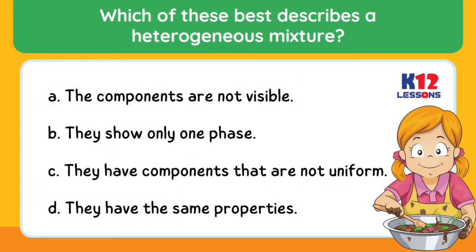Which of these best describes a heterogeneous mixture? A. The components are not visible. B. They show only one phase. C. They have components that are not uniform. D. They have the same properties.